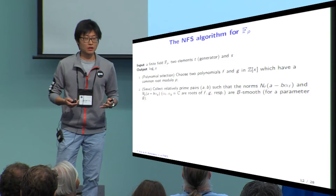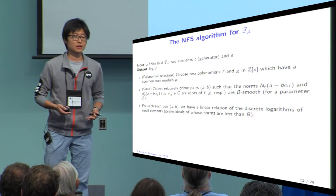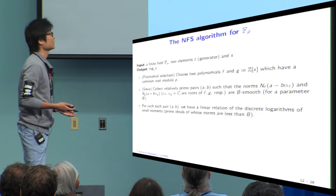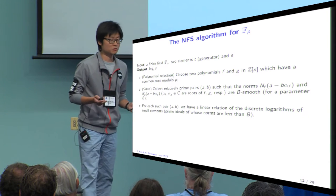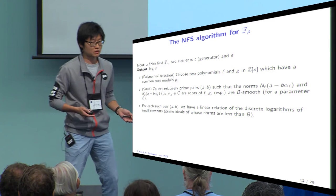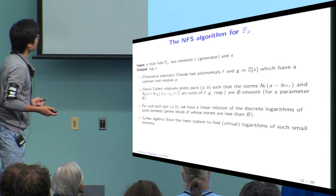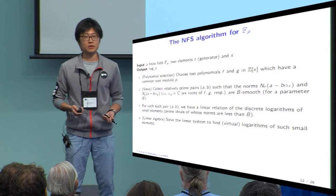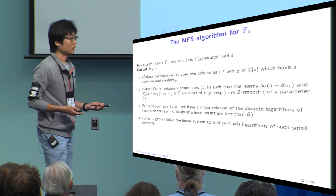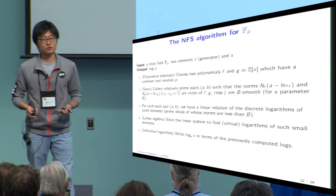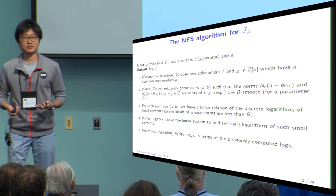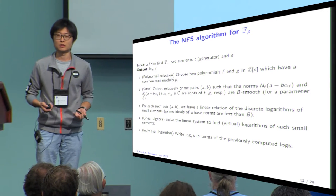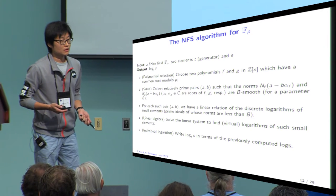If we have such a pair (A, B), then they give a linear relation of discrete logs of small elements — where small elements means those whose norm is less than B. If we get many such relations, we can find the logarithm of small elements by solving a linear algebra problem. Then to solve the actual discrete log of the target element, we express it in terms of the previously computed logs of small elements.